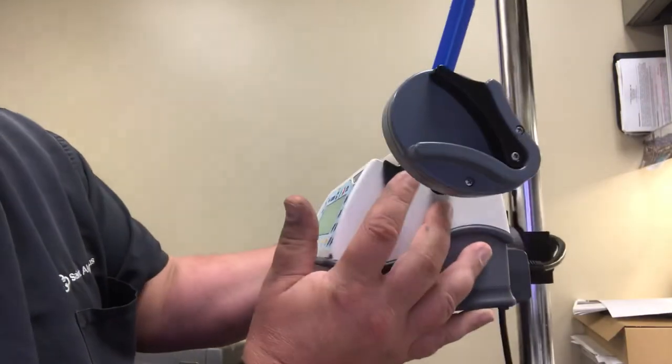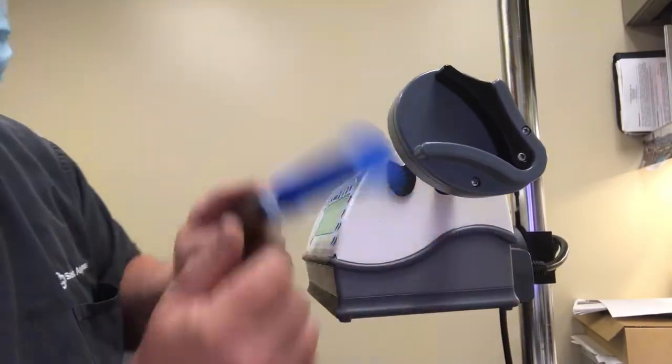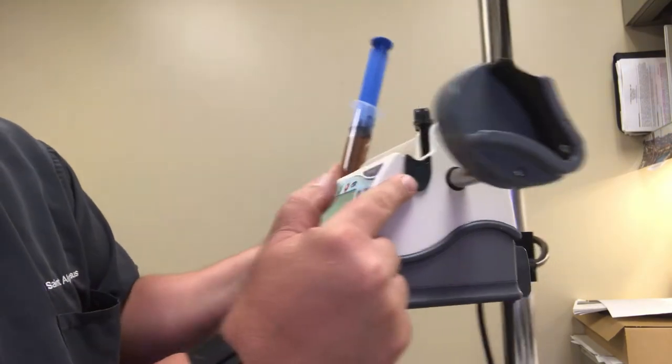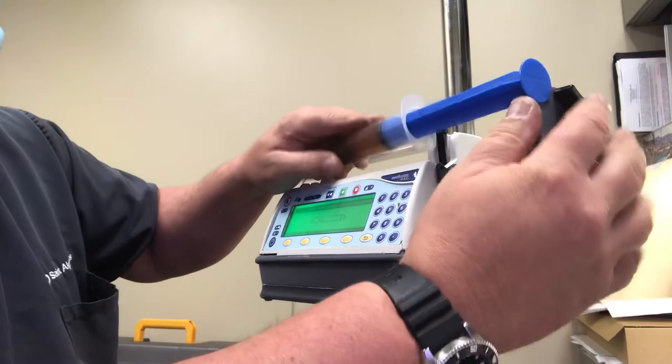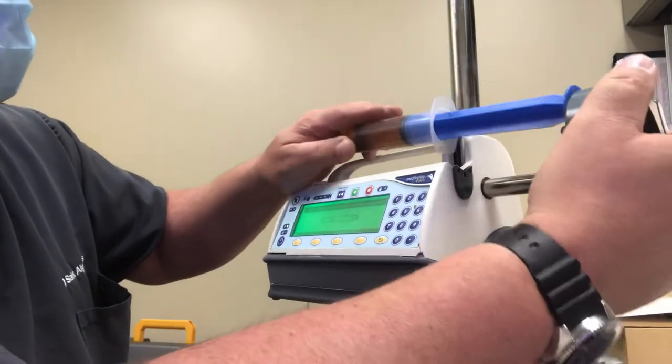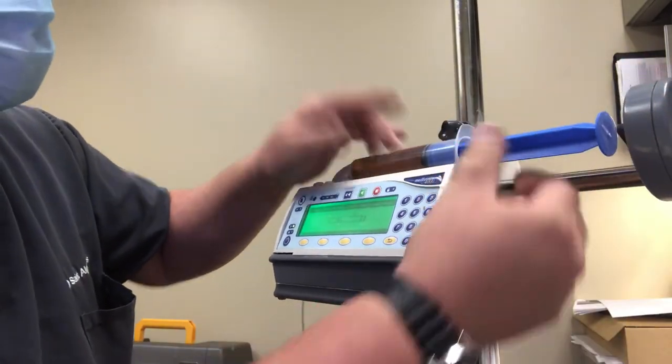And this little piece right here is kind of important, you have to be able to fit this flange inside of here between the pump and this or the machine will sit there and talk to you about it not being in there.